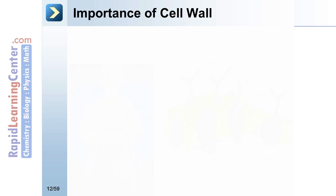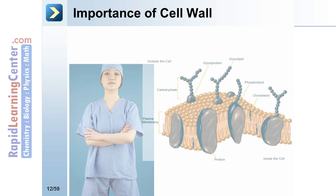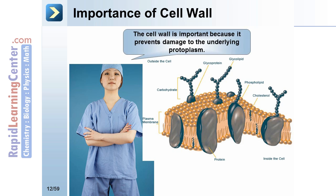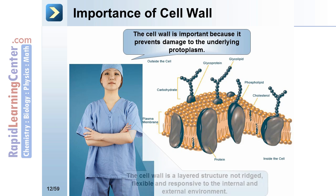Importance of cell wall. The cell wall is important because it prevents damage to the underlying protoplasm. The cell wall is a layered structure — not rigid, but flexible and responsive to the internal and external environment.